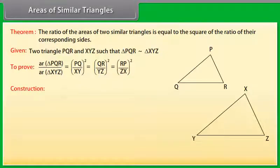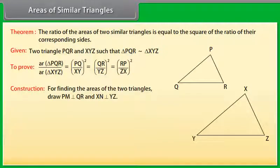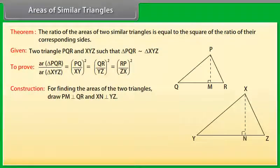Construction: For finding the areas of the two triangles, draw PM perpendicular to QR and XN perpendicular to YZ.